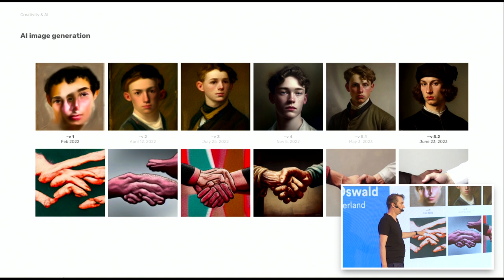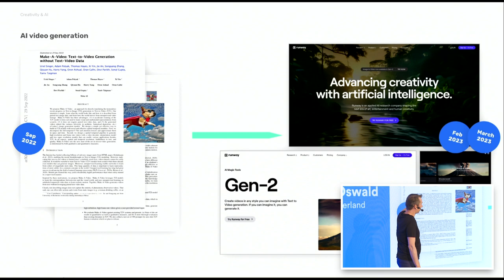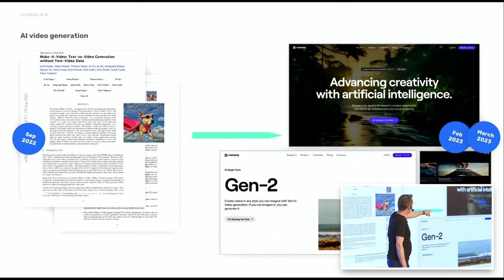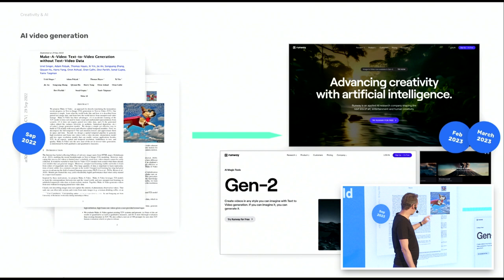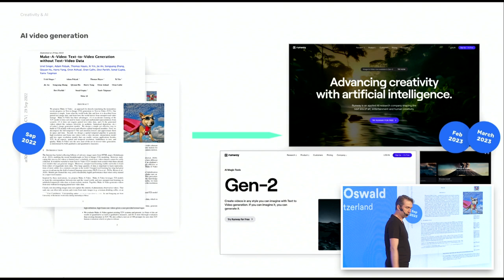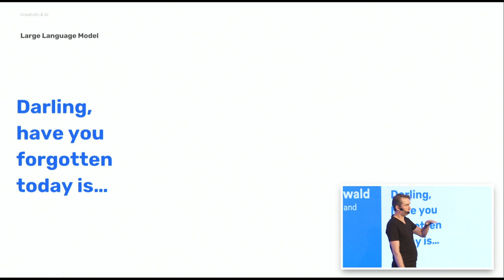And if you scale that up to video: this was an abstract from Meta engineers in September 2022. In February 2023 we started to have Runway with video — input to video output. And a little bit later in March we had Generation 2 coming out, text to video. We can do crazy stuff now. You have to pay for it, but this is a crazy development.